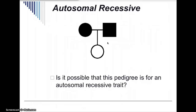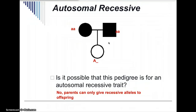Is it possible that this pedigree is for an autosomal recessive trait? If the mother is homozygous recessive (aa) and the father is also homozygous recessive (aa), the child could only be aa when you do the Punnett square. So they could not have a dominant allele showing. Parents can only give recessive alleles to offspring if it was a recessive trait — that dominant allele could not be there. So we know this is not an autosomal recessive trait.